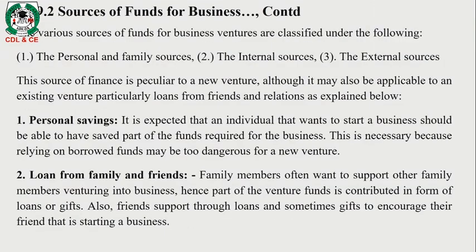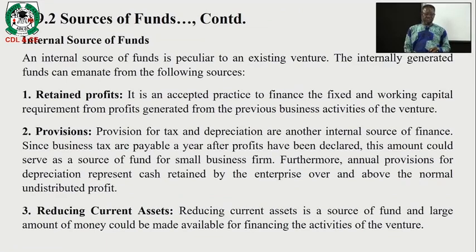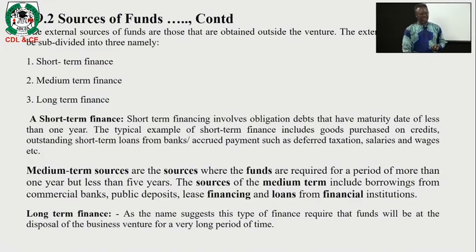The various sources of funds for a business venture are classified under: personal and family sources, internal sources, and external sources. Personal savings — it is expected that an individual will save money personally to start a business — and loans from friends and associates, including donations. For internal sources, we have retained profit: you can retain earnings within your business. Then provisions for tax and depreciation — all these monies can still be channelled into the business. Also, reducing current assets can be channelled into the business as well.